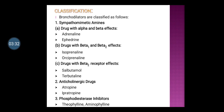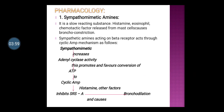Subclass C is drugs with beta-2 receptor effects — examples are salbutamol and terbutaline. Second class is anticholinergic drugs — examples are atropine and ipratropium. Third class is phosphodiesterase inhibitors — drug examples are theophylline and aminophylline. This is the classification of bronchodilators.